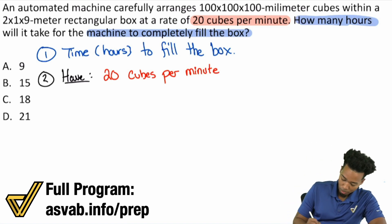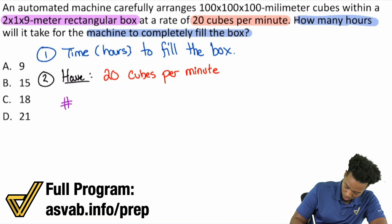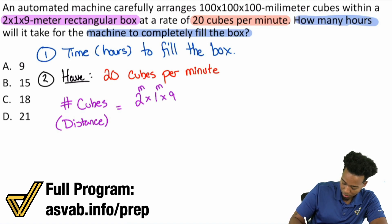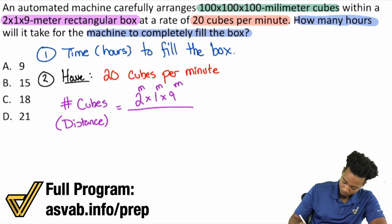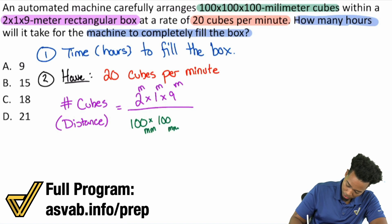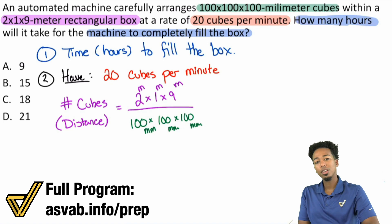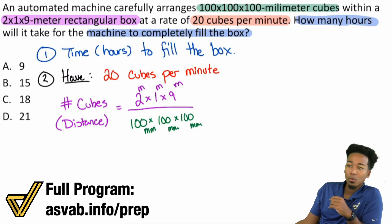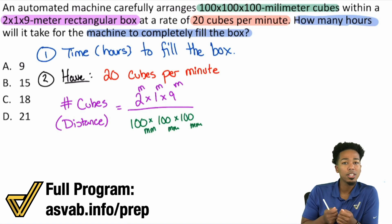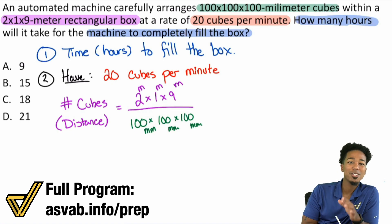How many cubes fit in that box? The way we're going to find that is we're going to divide the entire volume of the box by the volume of one cube. When you divide the volume by the space of each cube, you determine how many cubes fit in the box. We have a rectangular box that is 2x1x9 meters. The number of cubes equals the volume of the box, 2x1x9 meters, divided by the volume of one cube, 100x100x100 millimeters. Here's what makes this problem tough: unit conversions.